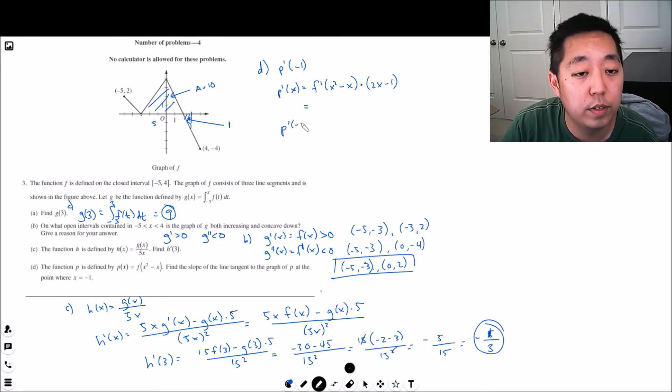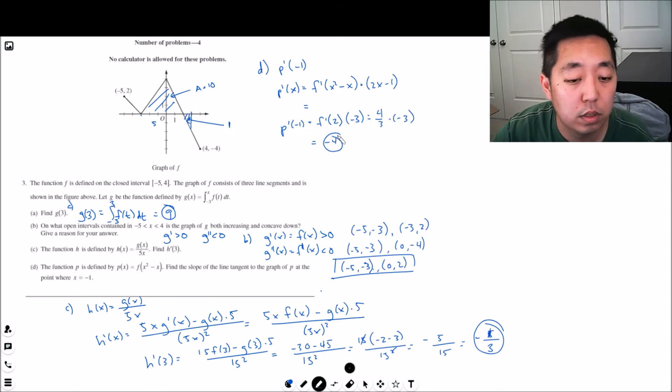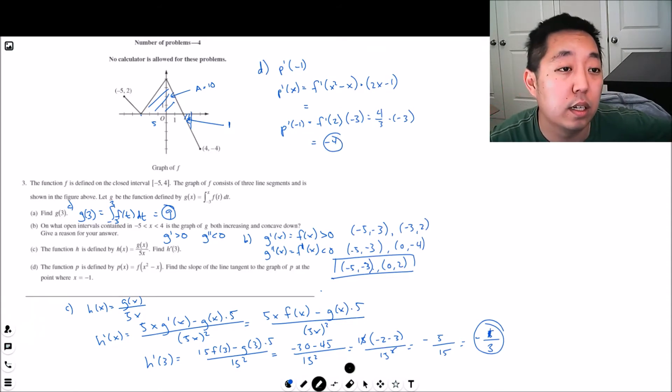And so p prime of negative one is equal to f prime of, negative one squared is one, minus negative one so that's two. Negative one times two is negative two, that's minus three. f prime at negative two, what is this slope, one two three four, four fourths, so this is four thirds times negative three and that's equal to negative four.